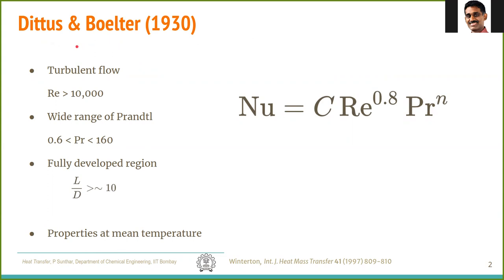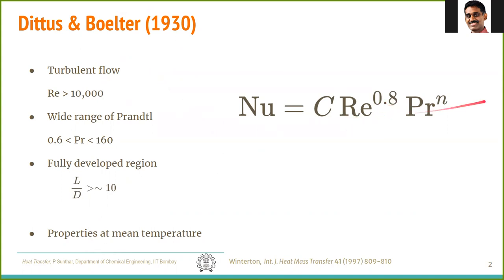The first one is called the Dittus-Boelter equation. It is applicable for pipe flow where the Reynolds number is greater than 10,000, over a reasonably wide range of Prandtl number from 0.6 to 160, and in the fully developed region where the pipe length is at least 10 times the diameter. All properties are evaluated at the mean temperature. The general form is C·Re^0.8·Pr^N.